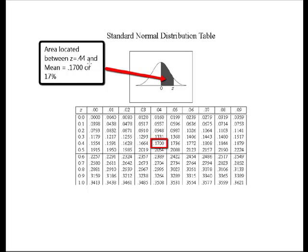So remember that when we use the standard normal distribution table, I'm going to use a z-score equal to 0.44 for demonstration purposes, and I'm going to look up my 0.4, pick up my 4,